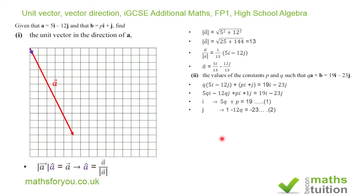Now for equation 2, if we add 12q to both sides and add 23 to both sides, we end up with 12q is equal to 24, which then means that q is equal to 2.